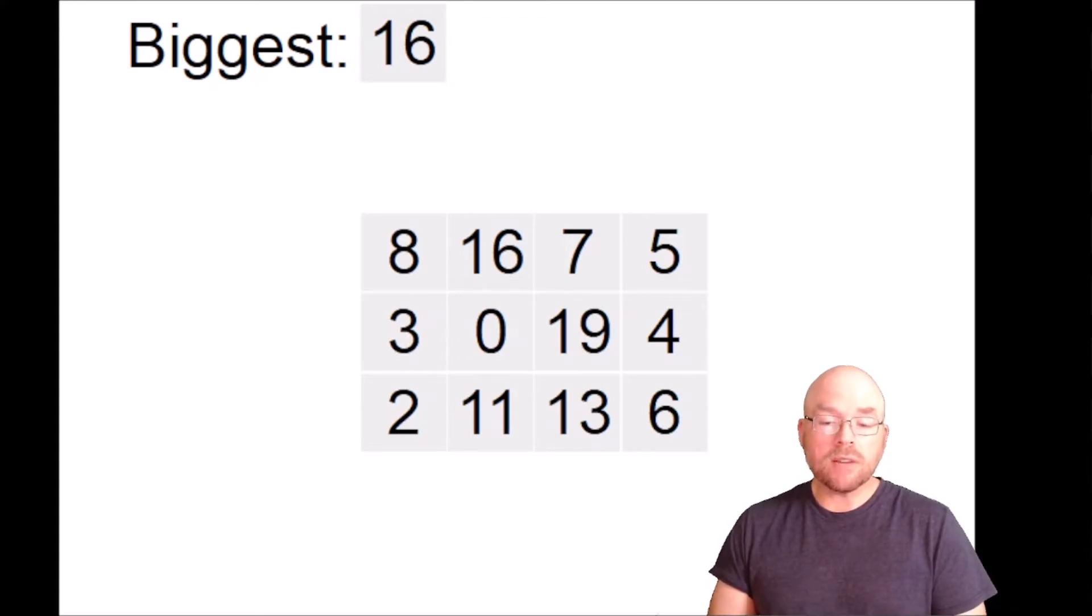Let's move to the second row. Start with the first value there, three. Is that bigger than what's in biggest? No. So we'll move to the next value, zero. Is that bigger? No. So we'll move to the next value, 19. Is that bigger than what's in biggest? Yes, it is. So we're going to replace the 16 in biggest with 19. Then we'll continue on. Take a look at the four. Is that bigger? No. So we're done with that second row.